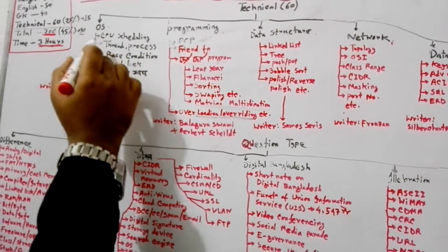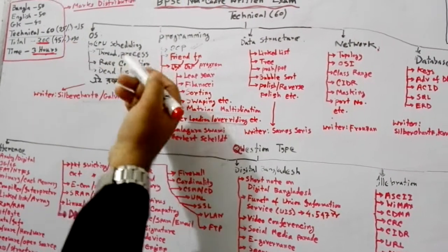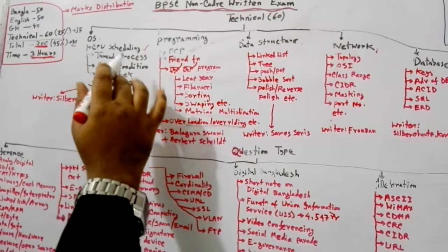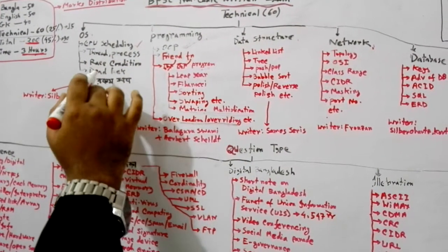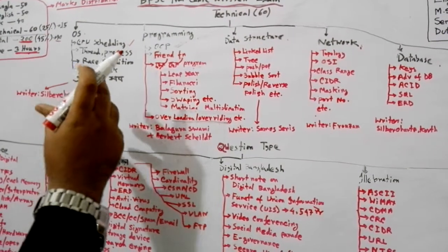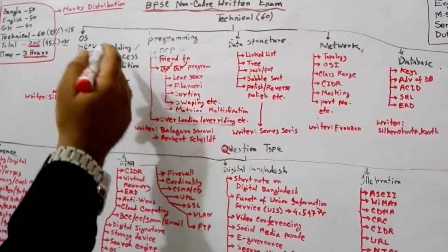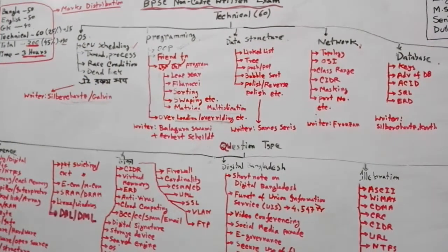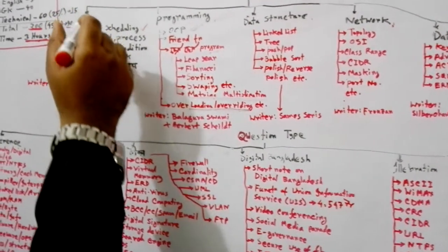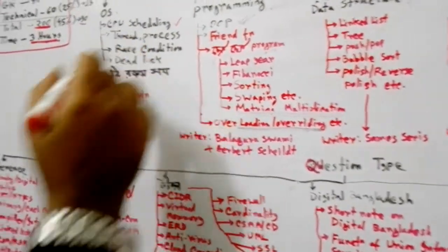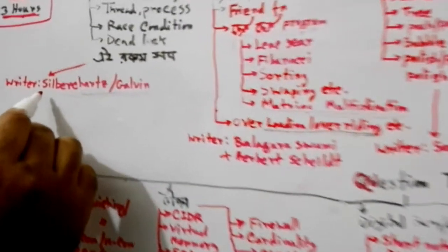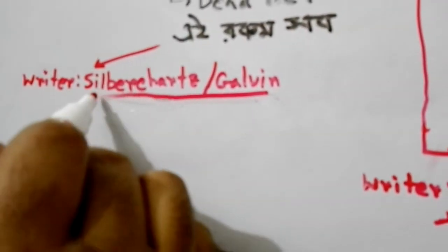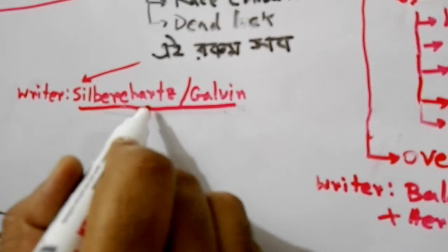Under the operating system: CPU scheduling, algorithms, threads, processes, race conditions, and deadlock — these topics are covered in the syllabus and there are many questions about them. For reference, use the Galvin operating system book, which you can Google and find.